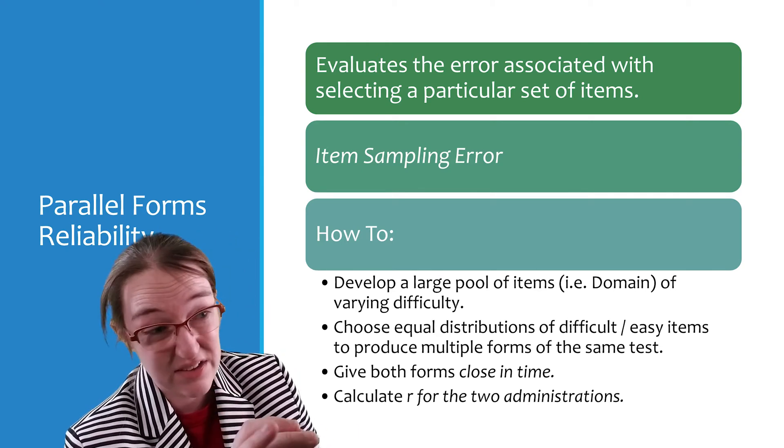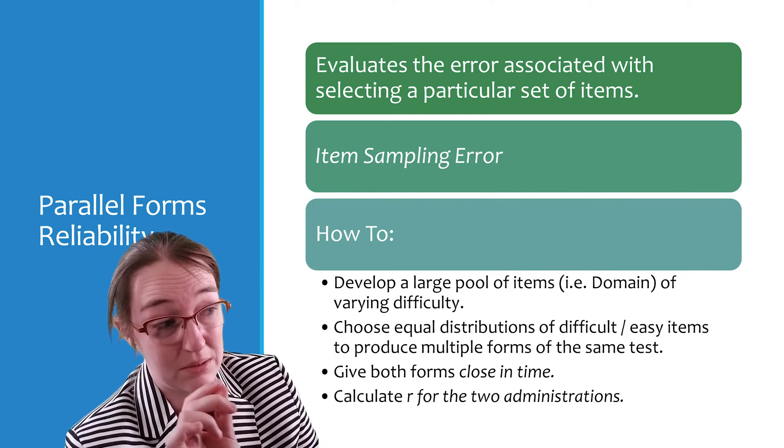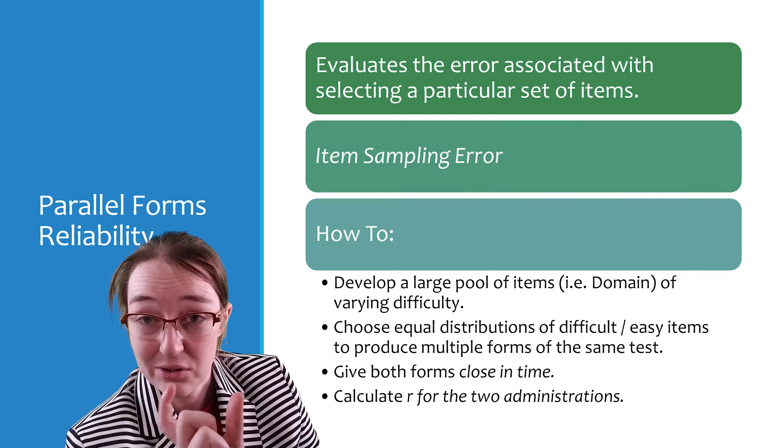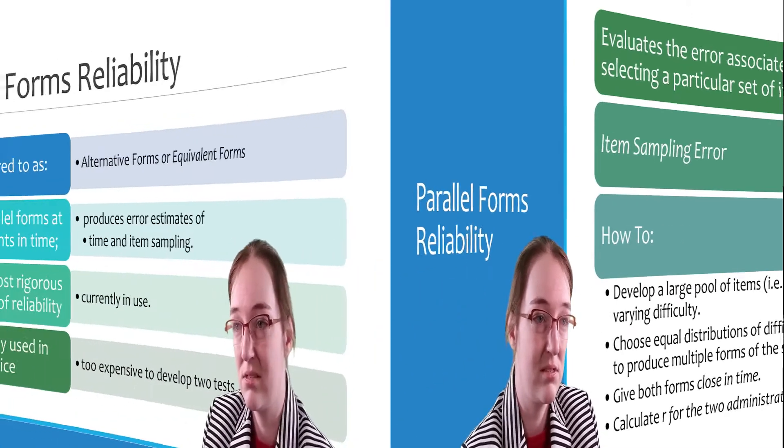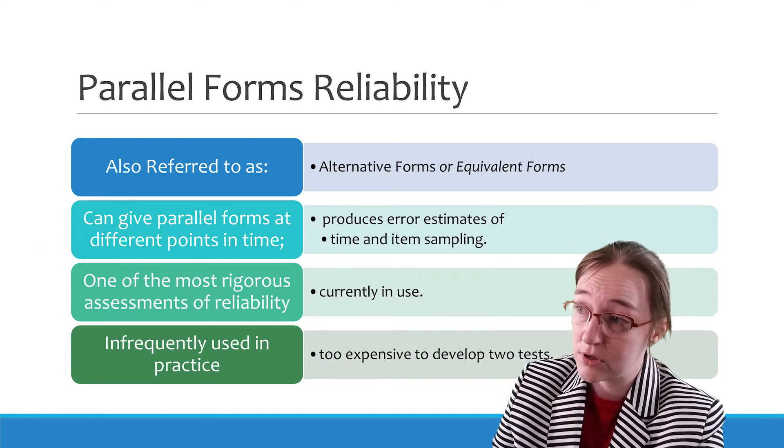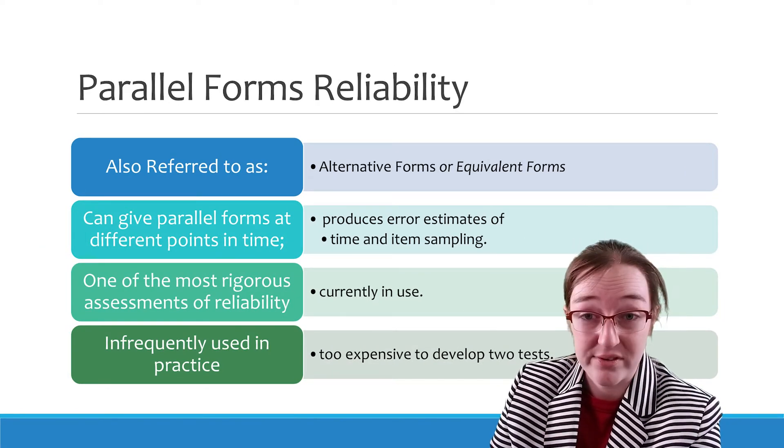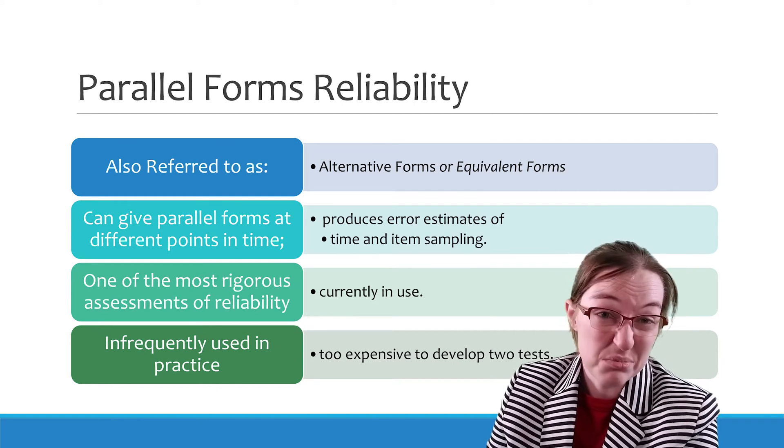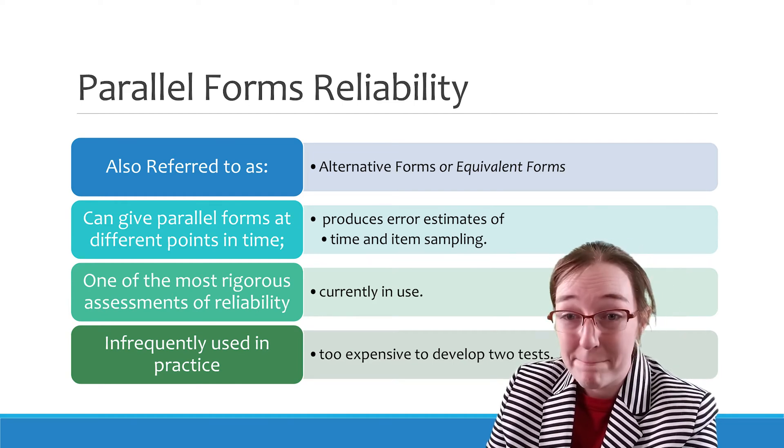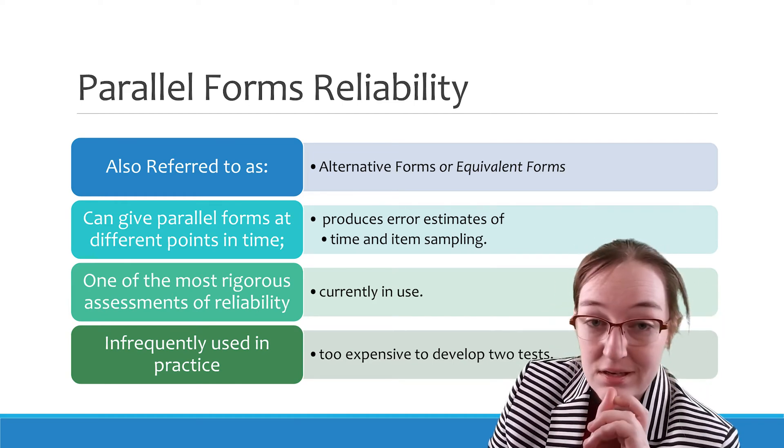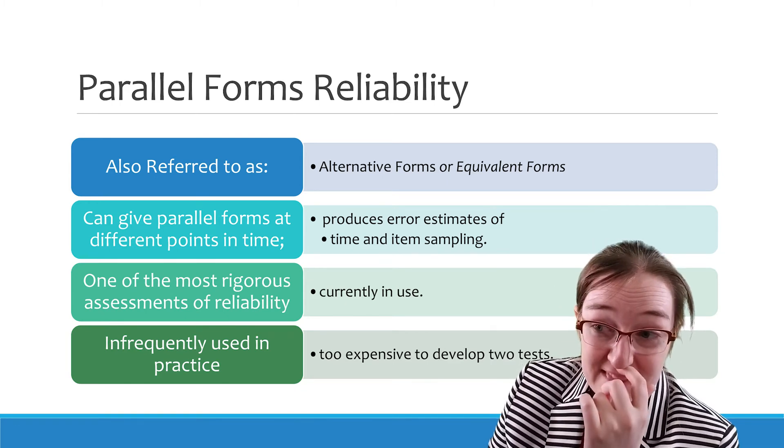With parallel forms, you have to give them at nearly the same time, and then you're calculating the correlation between those two performances. So this is also referred to as alternative forms or equivalent forms. Now, these terms are used interchangeably, but there is a difference in these concepts.